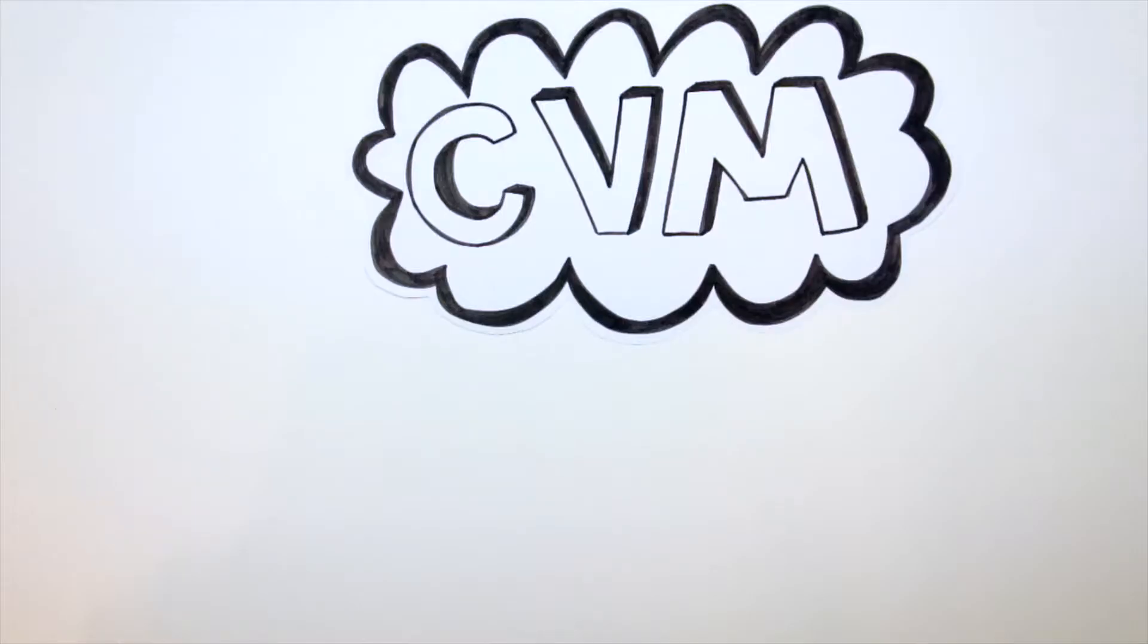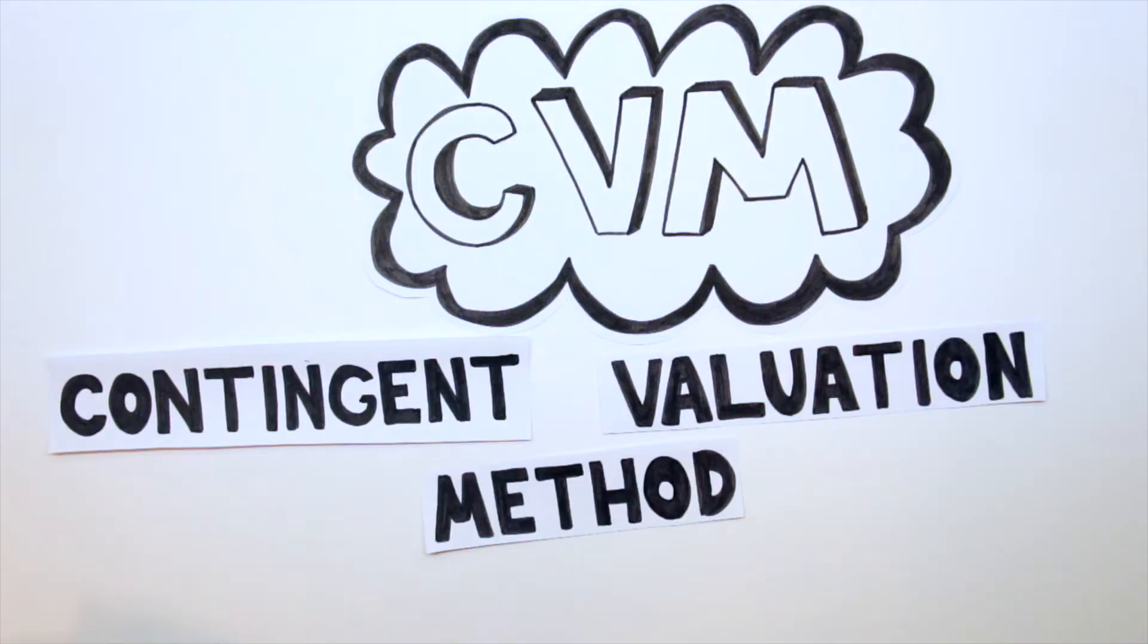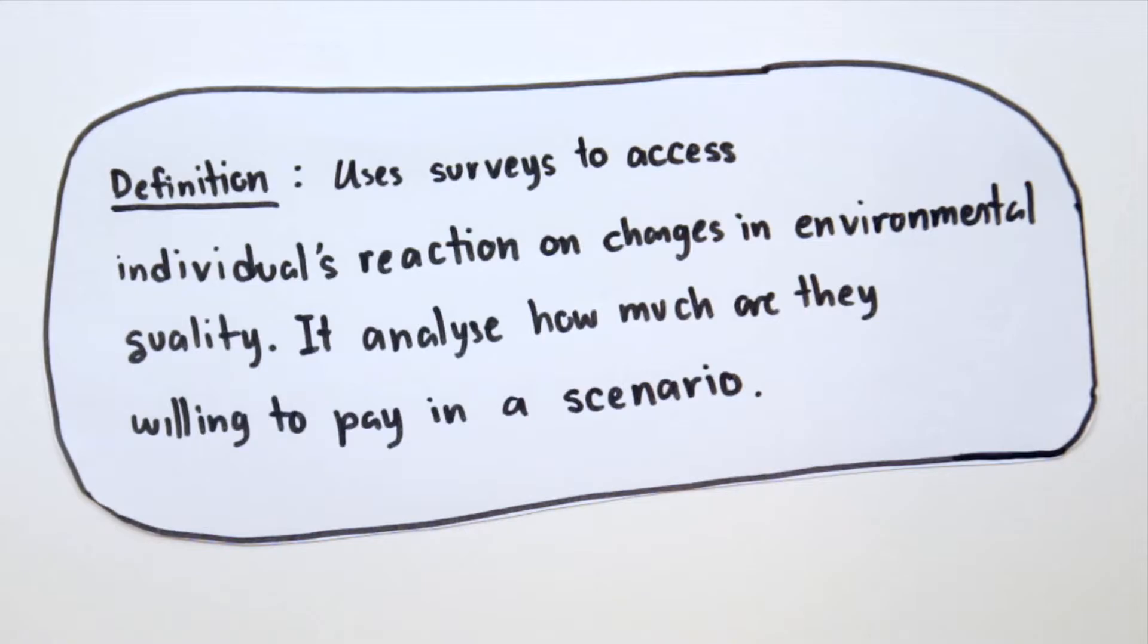What is CVM or the Contingent Valuation Method? CVM is used to assess individuals' reactions to changes in environmental quality. It analyzes how much people are willing to pay in a scenario.